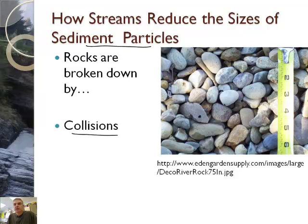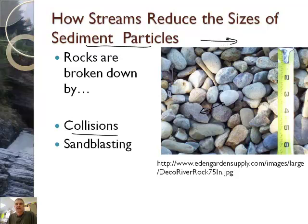Primarily, it's by collisions. As these rocks collide with each other and hit each other, they get smaller — remember, they're moving downstream like on the video clips we saw. Each time they get hit, they break a little bit apart. The second thing is what we call sandblasting: as a little piece of sand hits a rock, it grinds it and causes it to be rounded.